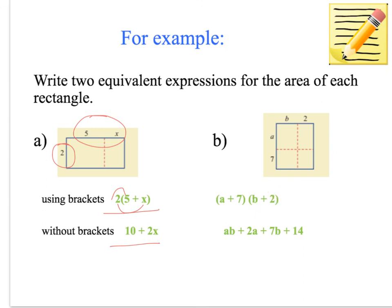We still need to multiply everything in this bracket by everything in this bracket. An easy way of doing that is to do everything by a first. So a times b is ab, a times 2 is 2a, and then 7 times b is 7b, 7 times 2 is 14. So you come up with ab + 2a + 7b + 14 as the answer.